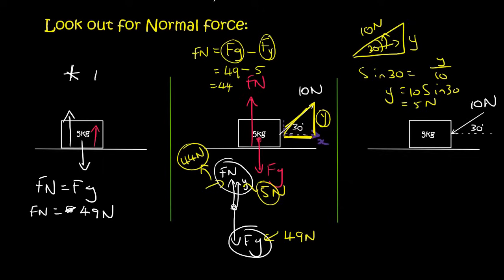What's trying to make the object fall through the ground? That's gravity. Now this applied force is acting in an upward direction, so it's helping the normal force. The normal force doesn't have to work as hard to keep the object from falling through the ground — that is why the normal force is only 44. It normally has to be 49, but because of this force helping it, it can be a little bit less.